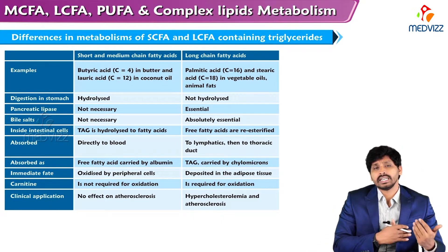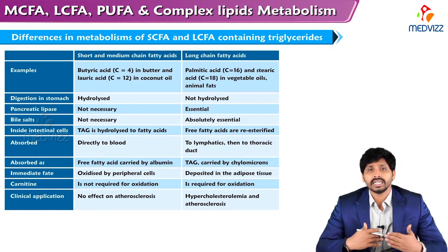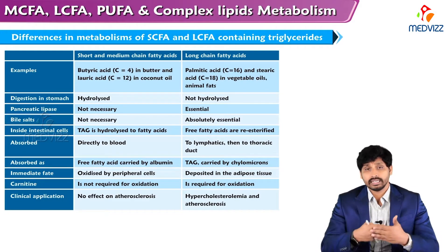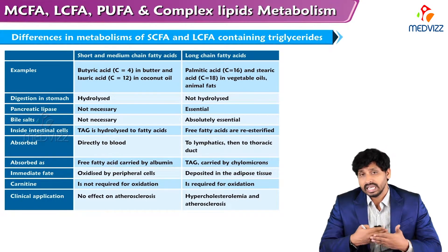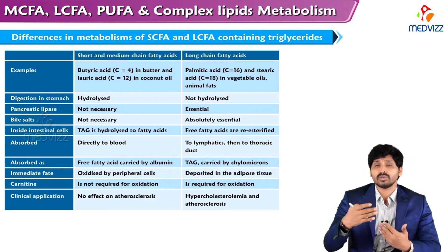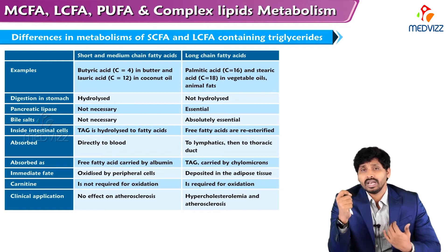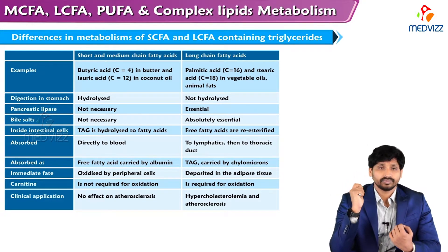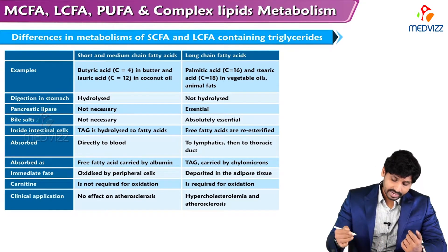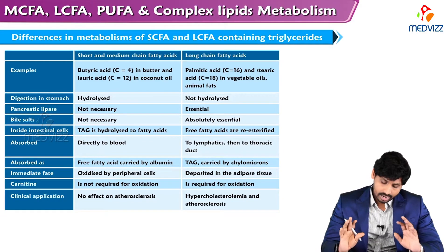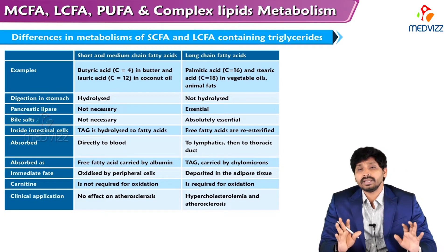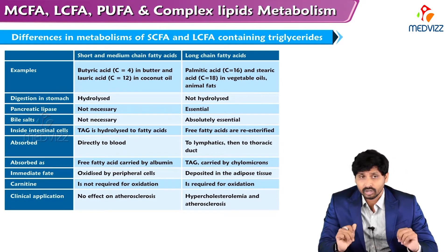Medium and short chain fatty acids can be easily absorbed in the intestine, but long chain fatty acids require the lymphatic system. With the help of lipoproteins, they enter the lymphatic system and then into the thoracic duct. That's why after a lipid-rich meal, your lymph is milky in color. Short and medium chain fatty acids are absorbed as free fatty acids and carried by albumin in circulation, while long chain fatty acids are carried by lipoproteins such as chylomicrons.